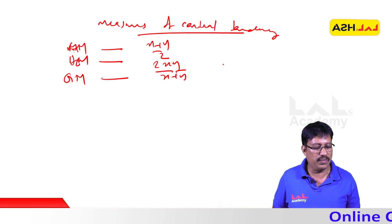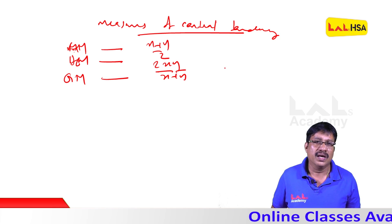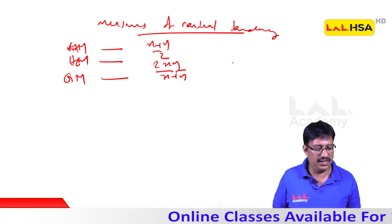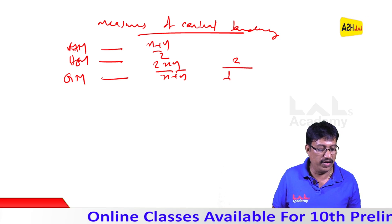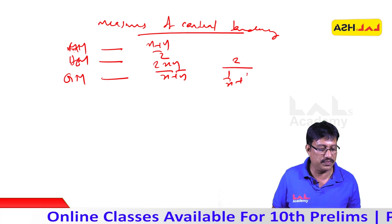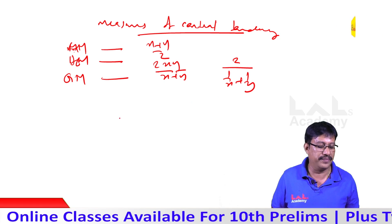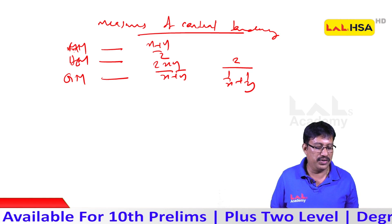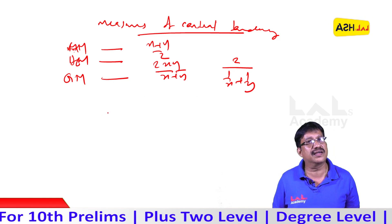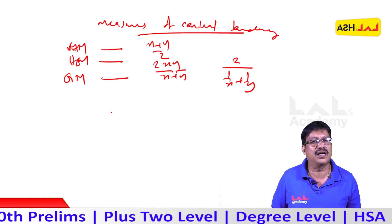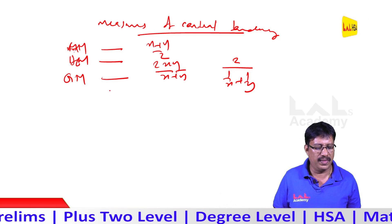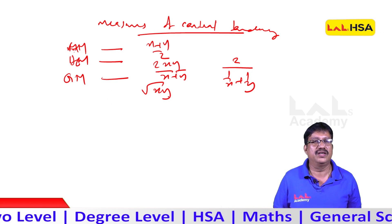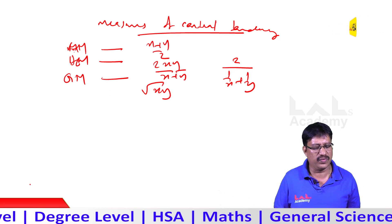The harmonic mean formula is 2xy divided by x plus y. The geometric mean is the square root of xy.